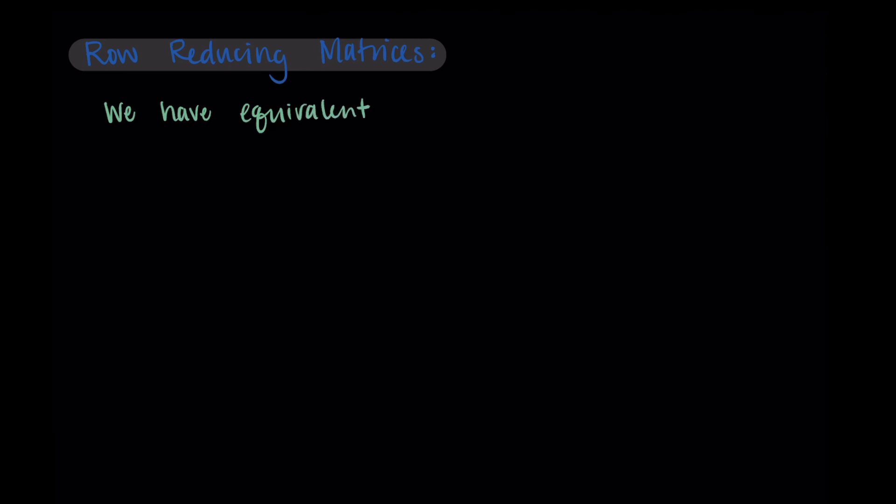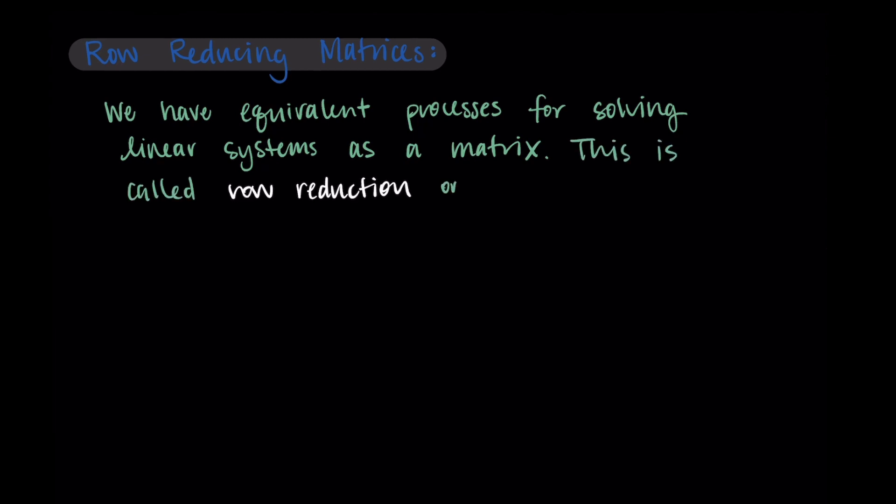But we have an equivalent process for solving linear systems when we view them as a matrix. This process, and the way that we do this with matrices, is called row reduction or Gaussian elimination. I like to just call it row reduction, so that's what you'll hear in my videos.